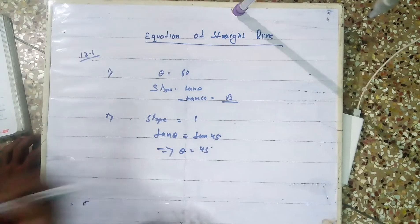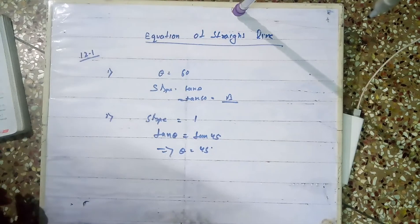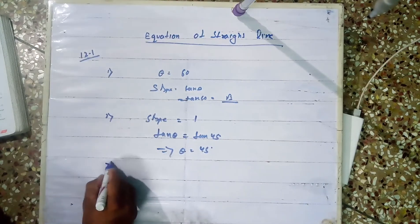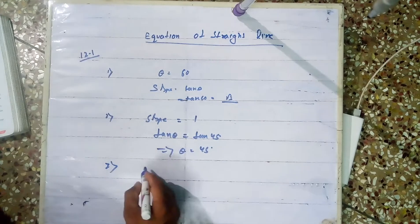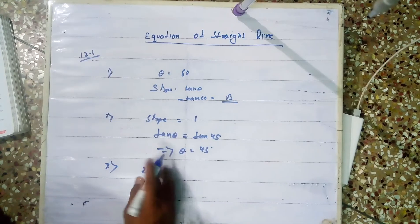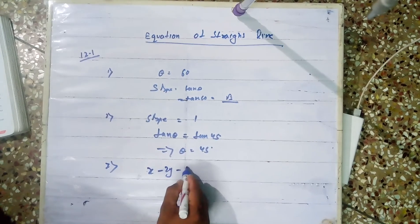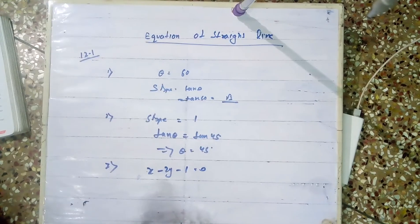So inclination is 45 degrees. These are some easy sums you can do. I will do number 7. Number 7: Find the slope and y-intercept of the following lines. The equation is 2x minus 2y minus 1 equals 0.